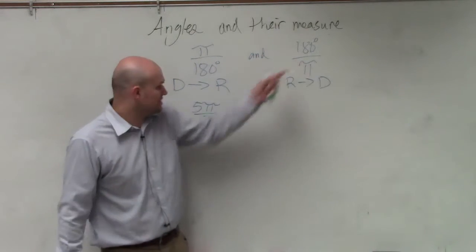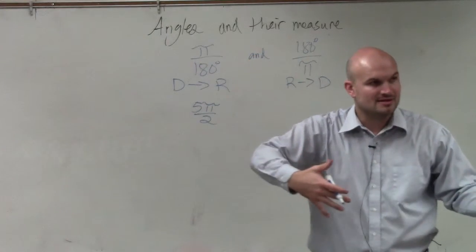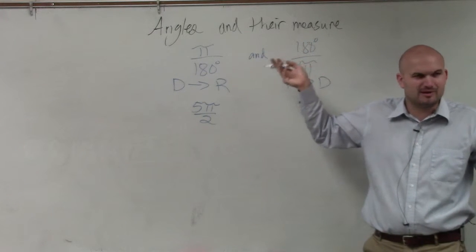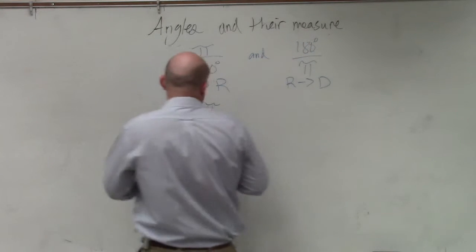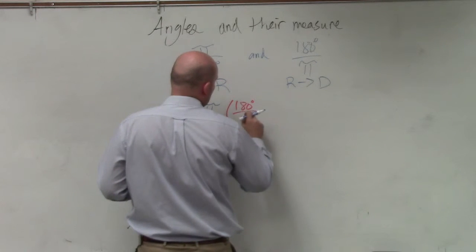And the reason why this one works is if I have something in radians and I want to put it in degrees, I want to first make sure I insert my degrees and eliminate pi. I really don't want to be dealing with pi. So all I'm simply going to do is multiply it by 180 degrees over pi.